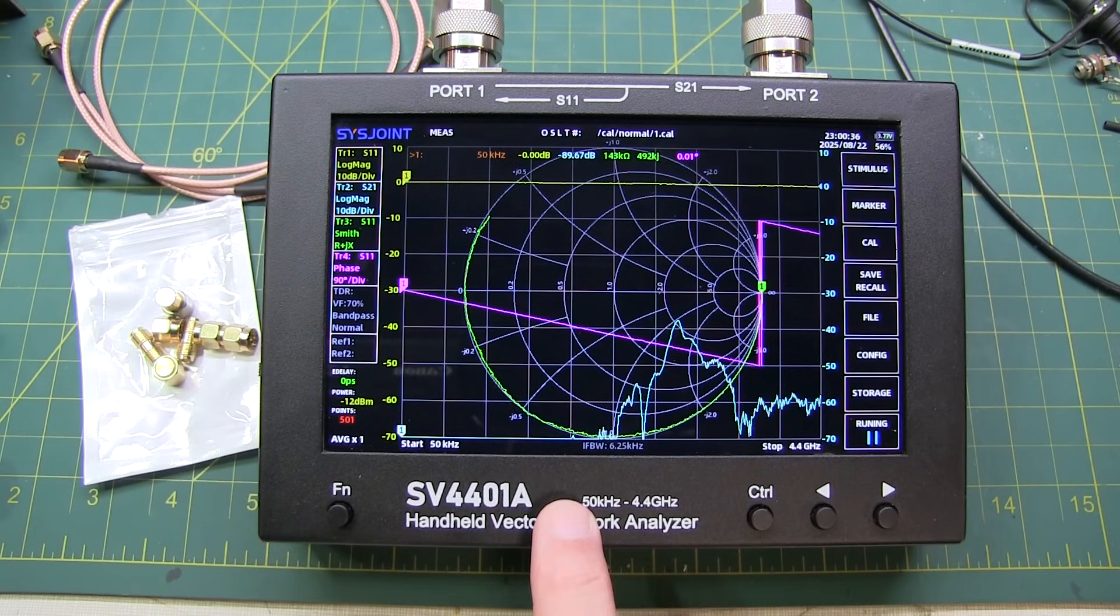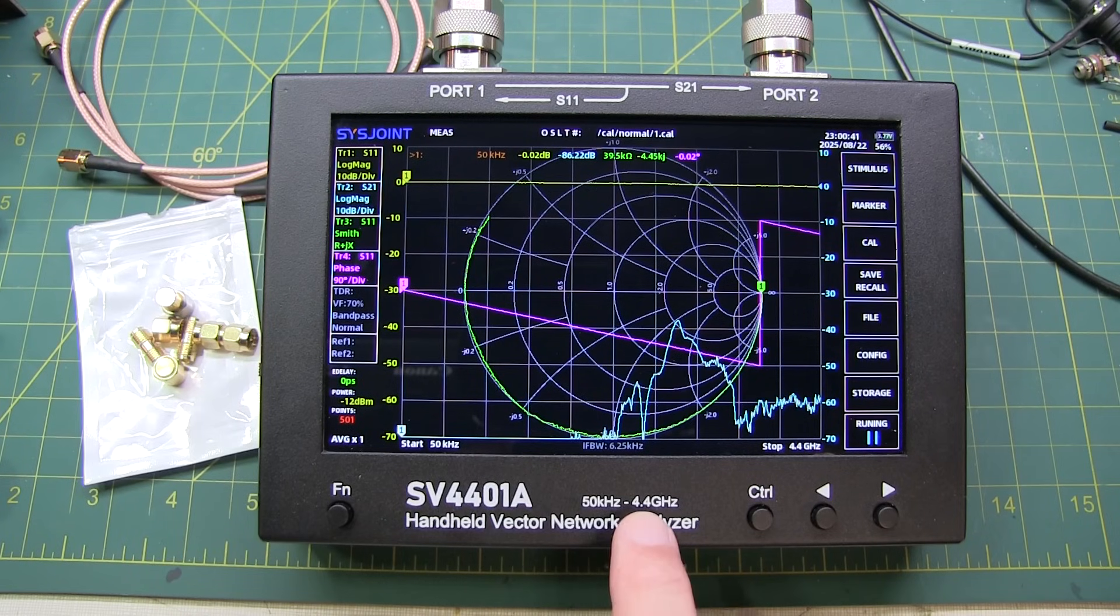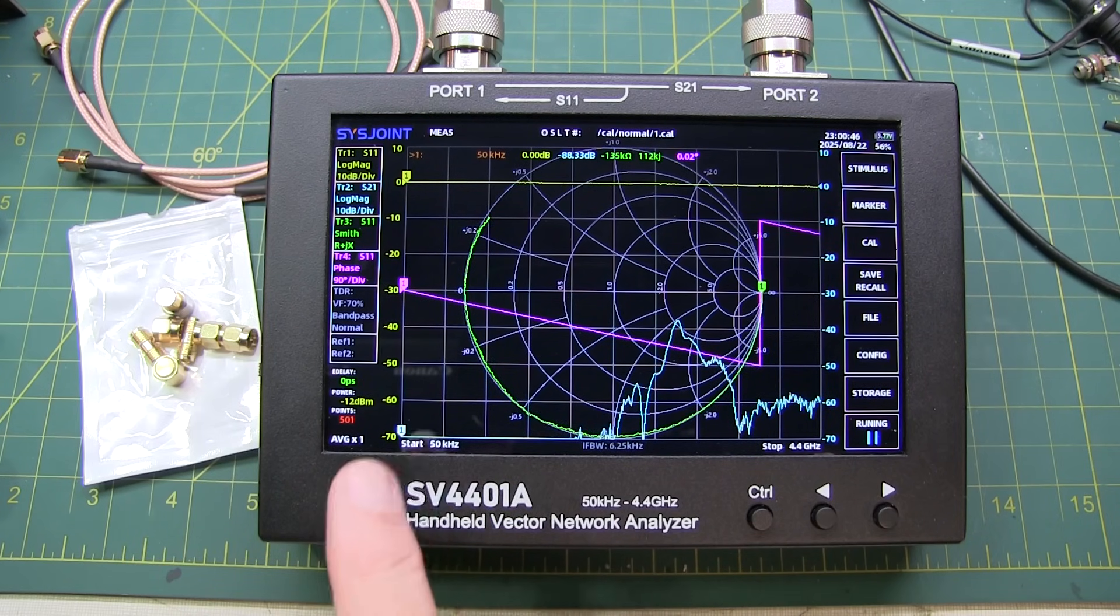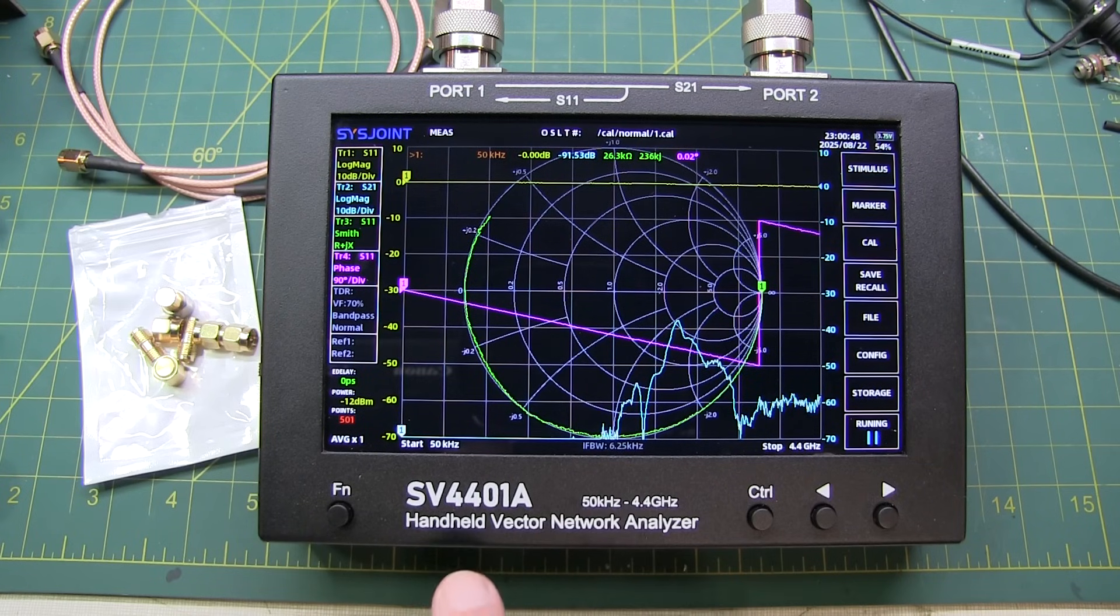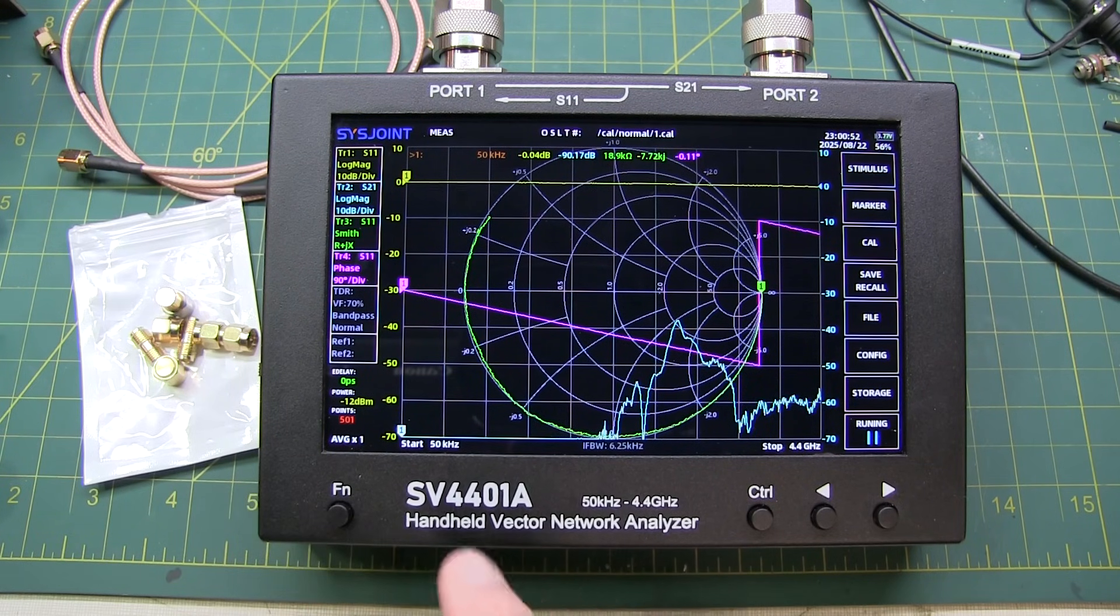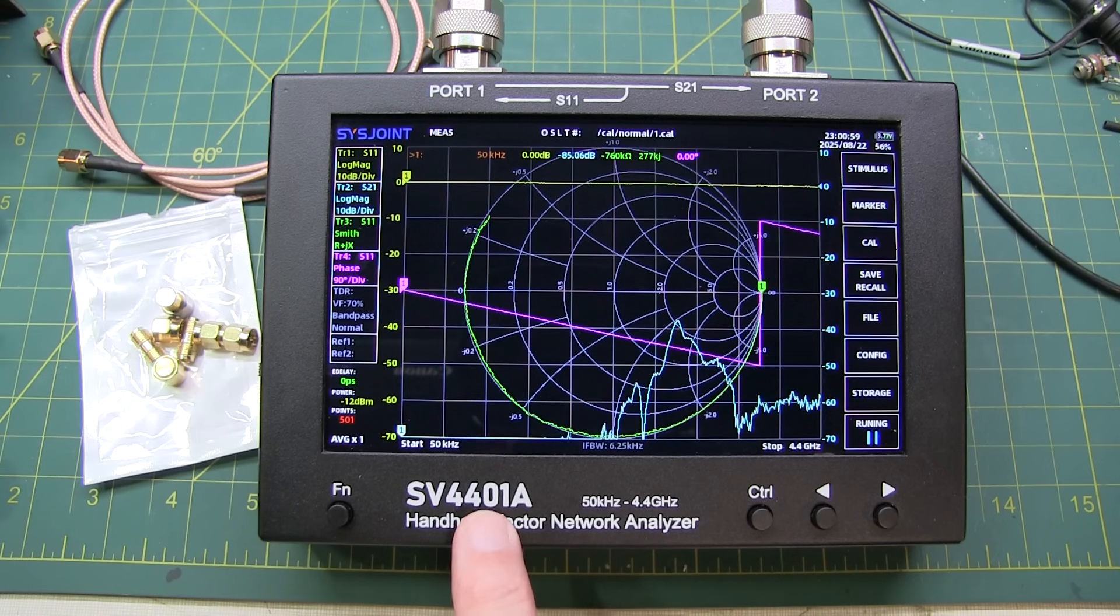As you might imagine, this unit here has some improved specifications over that Nano VNA H4. This will cover up to 4.4 GHz. It has an adjustable output power range from minus 42 to about minus 12 dBm. And then dynamic range-wise, it features about 75 dB dynamic range up to about a gigahertz and a half for S21 measurements and about 50 dB dynamic range for the S11 measurements.